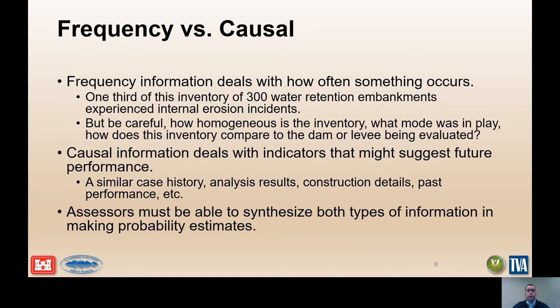There are two types of information that assessors must synthesize when making probability estimates. Frequency information deals with how often something occurs — a common example is historical failure rates — but must be used with caution because the probabilities may represent several event tree probabilities, and the inventory of dams or levees used may not be appropriate for the project being evaluated. Causal information deals with indicators that might suggest future performance, such as similar case histories, analysis results, construction details, or past performance.